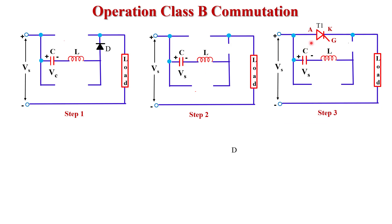We then give a gate triggering pulse to thyristor T1, and T1 gets turned on and behaves like a short circuit. Current flows from supply voltage through T1, the load, and back to the supply voltage — current follows this path.